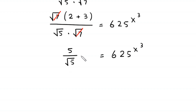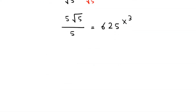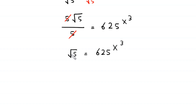Now to rationalize the denominator, we multiply and divide by root 5. So in the numerator, 5 times root 5 divided by root 5 times root 5 becomes 5, equal to 625 to the power x cubed. This 5 cancels with the other 5 and we are left with root 5 equal to 625 to the power x cubed.